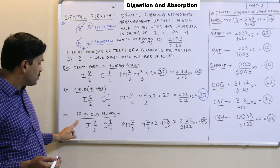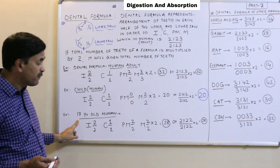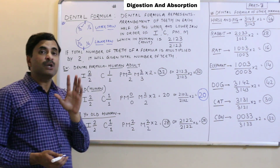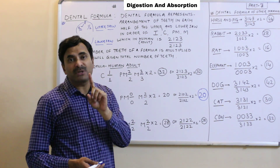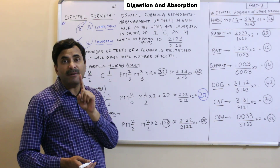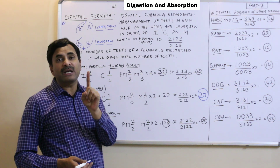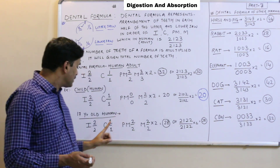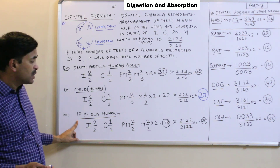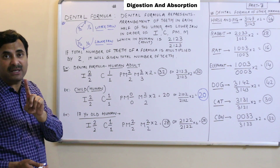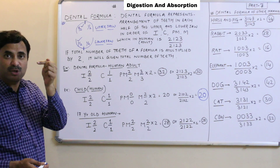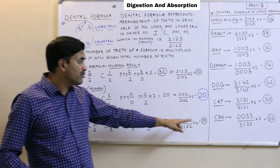Now, for a 17-year-old human being — the reason we use 17 years specifically is that wisdom teeth, also called the third molars, erupt between the ages of 18 to 25. So a 17-year-old would not yet have wisdom teeth. We can reduce 4 teeth from 32, giving 32 minus 4 equals 28.